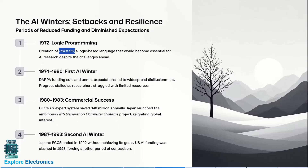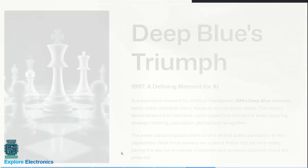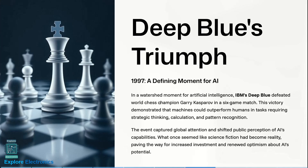From 1987 to 1993, the second AI winter struck. Japan's FGCS project ended in 1992 without achieving its goals, and US AI funding was slashed in 1993, forcing another period of contraction. Then came Deep Blue: IBM's Deep Blue defeated world chess champion Garry Kasparov in a six-game match.